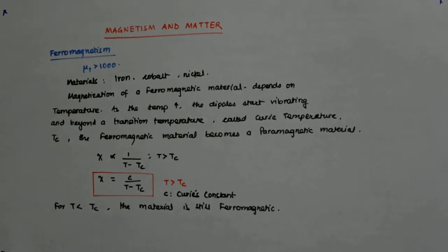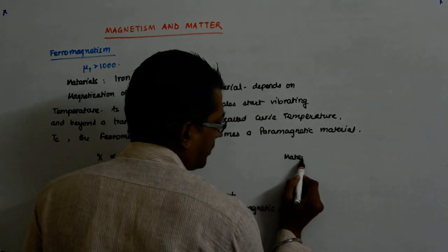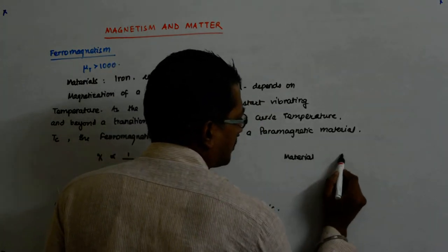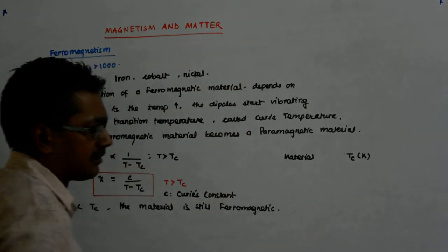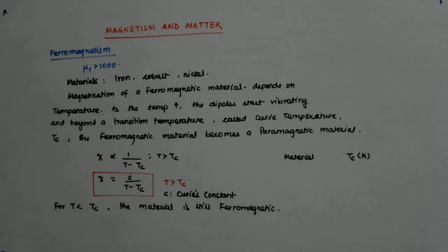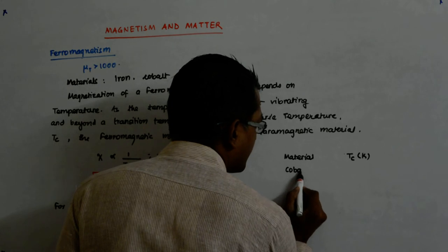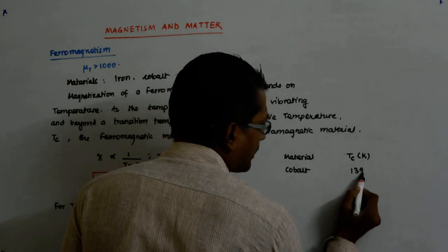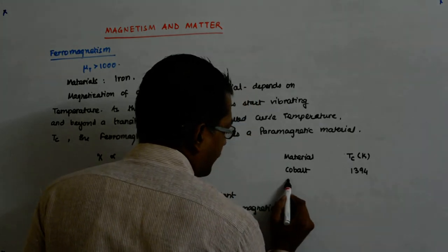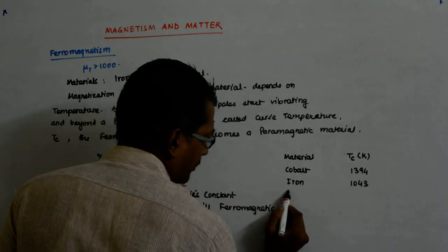The various values of Tc for different materials are this material and Tc in Kelvin. So, for Cobalt it is how much? 1394. And for Iron it is 1043 in Kelvin.